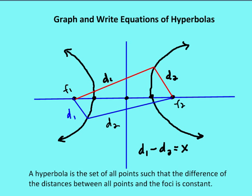A circle is the set of all points equidistant from a fixed point called the center. A parabola is the set of all points equidistant from a point called the focus and a line called the directrix. An ellipse is the set of all points such that the sum of the distances from the two foci is constant, and the hyperbola is defined by the difference of the distances from the two foci being constant.